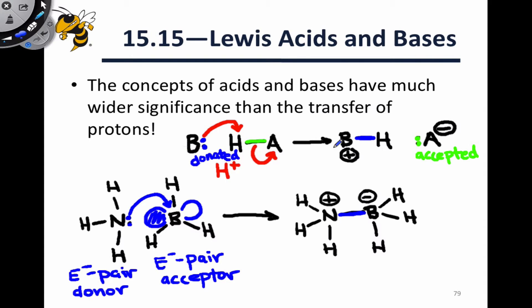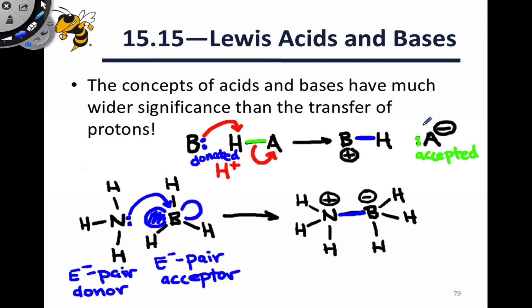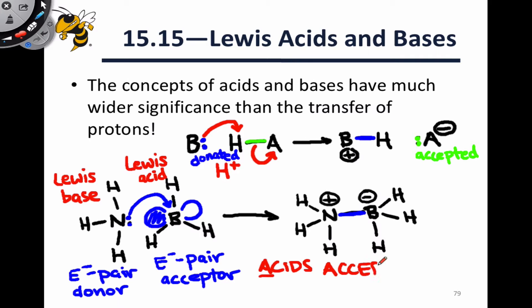We can see the same kind of behavior in the Bronsted-Lowry case above: B is donating a lone pair, while HA — and in particular the A group — is accepting a lone pair. This type of reactivity occurs in almost any reaction involving pairs of electrons moving around. That's the beauty of thinking about acidity and basicity this way — we're refocusing our attention on the electron pairs as opposed to H+, which is ultimately just one arbitrary Lewis acid. The Lewis theory of acids and bases focuses on electron pairs. Nitrogen in NH3 is a Lewis base — it donates an electron pair toward BH3. BH3 is accepting the electron pair, so it is a Lewis acid. Acids accept electron pairs, while bases donate electron pairs under the Lewis acid-base paradigm.